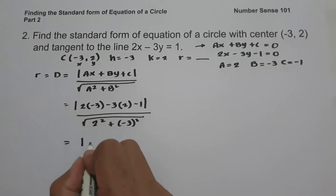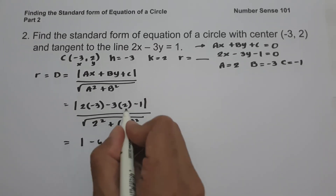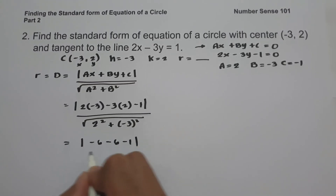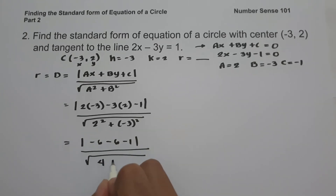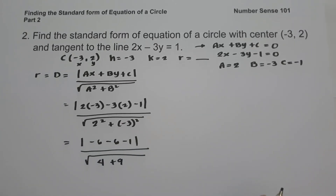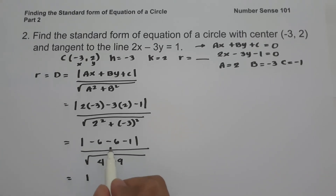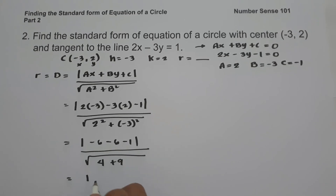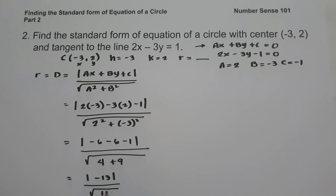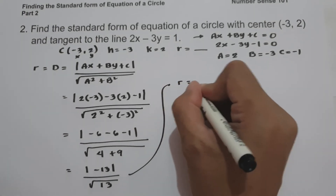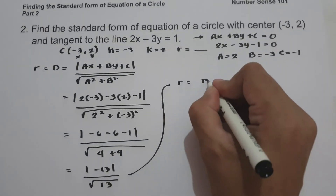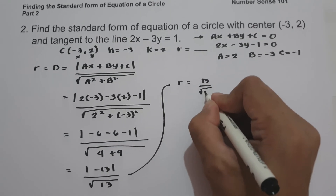The absolute value of negative 6 minus 6 is negative 12, minus 1 is negative 13. The absolute value of negative 13 is 13. And we have the square root of 13 in the denominator, giving us 13 over square root of 13.